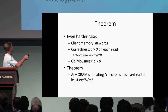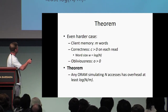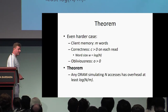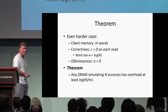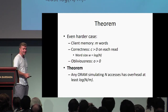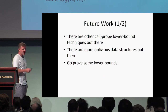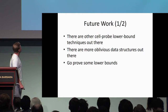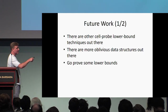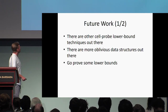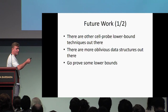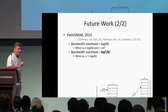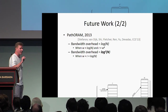So with M words of client memory, constant correctness, and constant obliviousness, the overhead stays log(N/M). We've tried and tried — it's a nice open problem whether you can relax the ORAM definition to circumvent this bound. There are more cell-probe lower bound techniques and more oblivious data structures out there, so there's future work to prove more lower bounds.